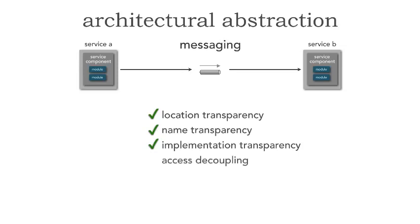How about access decoupling? Do I need to know what service B's protocol is? Unfortunately, yes. It happens to be messaging, and if I'm using ActiveMQ then I have to use ActiveMQ; if I'm using AMQP, I have to use AMQP. So whatever service B is listening on, I have to adhere to. I don't have access decoupling because this is simple messaging. Finally, contract decoupling — can I pass service B different information? No, I have to adhere to the contract, because with basic messaging there's no capability to transform that contract. So in this case I have the first three fairly easily, but not the last two.